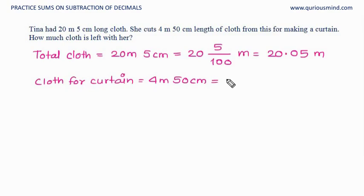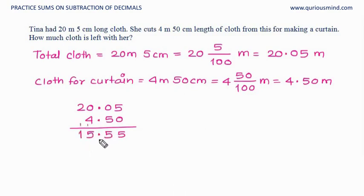Cloth for making curtain: 4 meter 50 centimeter. 4 meter does not need any conversion, 50 centimeter will be divided by 100. 4 whole, point. We need two digits, we have two digits: 4.50 meters. Now we need to do subtraction, so we'll write numbers one below the other, aligning the decimal point. 15.55 is the answer. So Tina is left with 15.55 meter cloth.